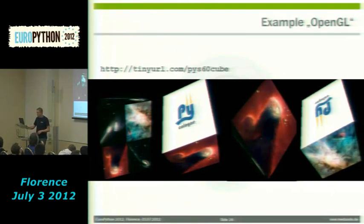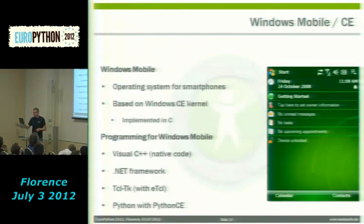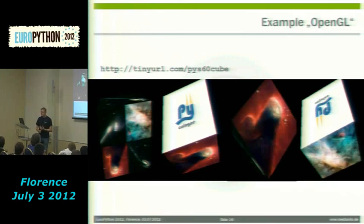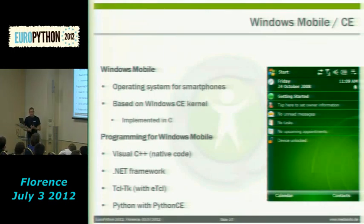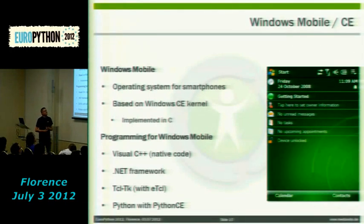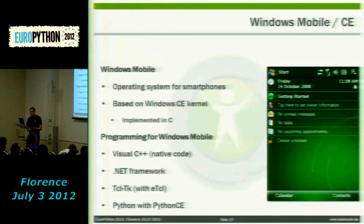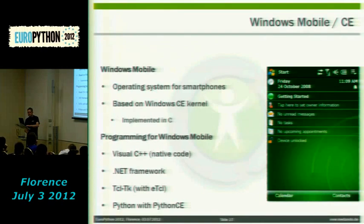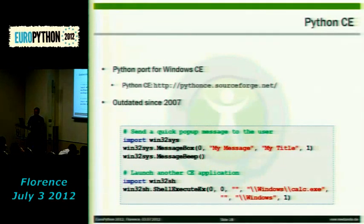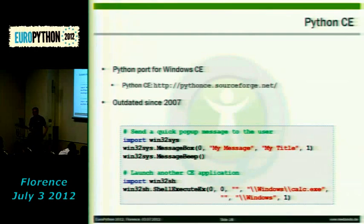You could also do graphical stuff like OpenGL graphics. The other operating system at the time was Windows Mobile, also called Windows CE, by Microsoft — for smartphones based on the Microsoft CE kernel implemented in C. Programming was mainly in C++ or .NET, but Microsoft also provided support for TCLTK. There was a Python implementation called Python CE — an open source project, also outdated since 2007. Programming was similar to Symbian: presenting a message with an application title is just three lines.